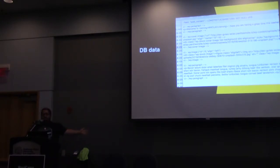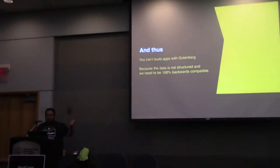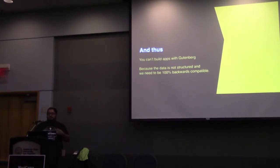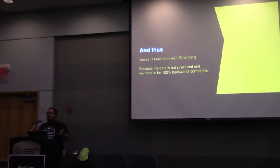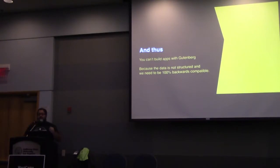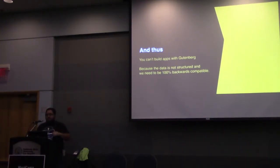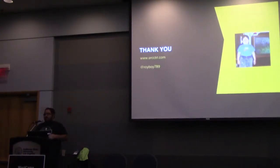Backwards compatibility is both the greatest thing about WordPress at times, but also the bane of my existence. If you're running a WordPress site that's 3.9 or later, they say your site should never break. WordPress runs 30% of the internet, so not having backwards compatibility is not a good option. So here we have Gutenberg, and here we have data that we can seemingly do nothing with because it's not structured.